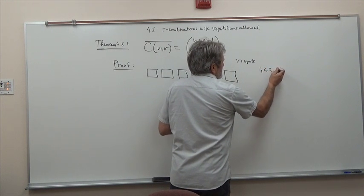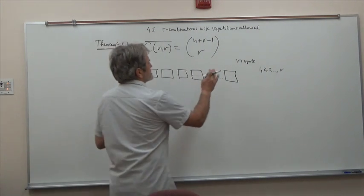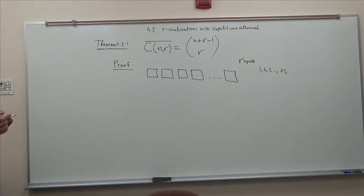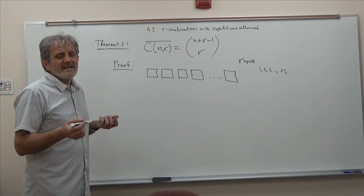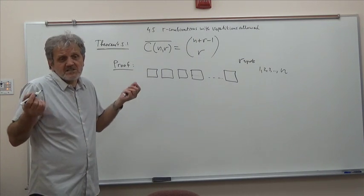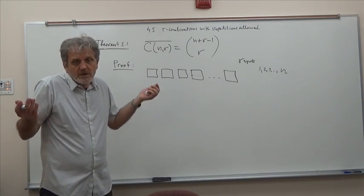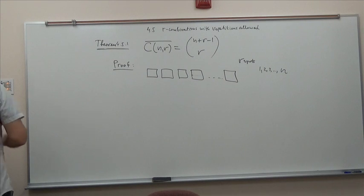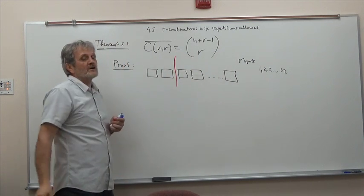Here it is. Imagine that I have r spots because I'm choosing r, and I need to fill them in with the numbers 1, 2, 3, up to n. What can I do? Since the order doesn't matter, I will first choose as many ones as I need or decide - either taking no ones, maybe I don't want any, or a few, or all of them to be ones. I'll take ones, take ones, take ones, and then stop wherever I stop.